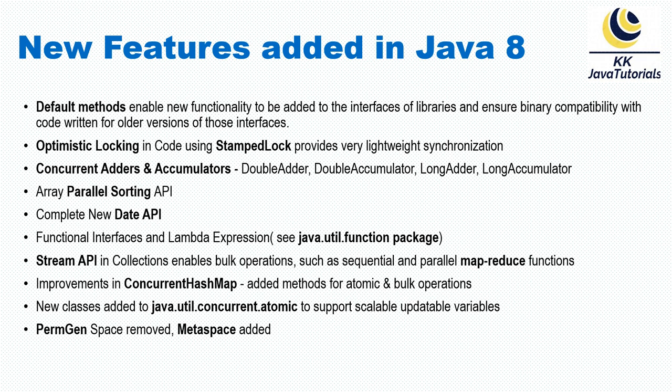The next feature is new classes added in the java.util.concurrent.atomic package to support scalable and updatable variables. If you look into the atomic package, you'll find classes like AtomicInteger and AtomicLong, which have been updated to handle scalable and updatable variables.